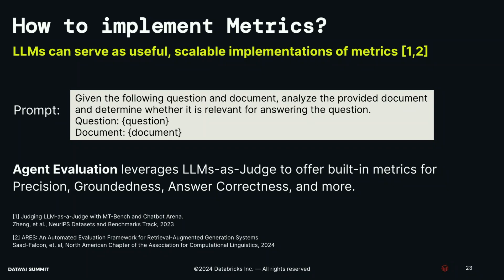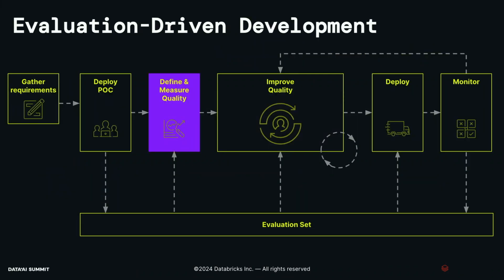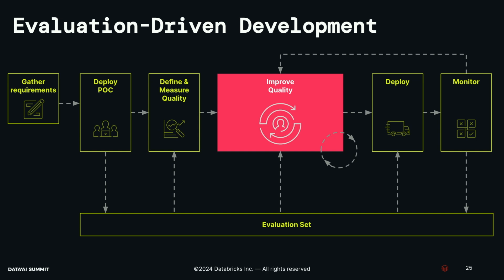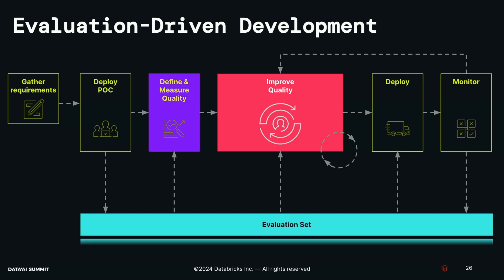Given the subtleties in how these metrics are defined, the way we implement this in agent evaluation is by leveraging LLMs as a judge — a recent research topic showing that you can use LLMs to evaluate LLMs. There are caveats and you need to think about alignment with your use case, but overall you can leverage these to get high-quality results by prompting LLMs to implement your metrics such as relevance, corresponding precision, groundedness, answer correctness, and more. I'll now hand over to Alkis to talk about how all these things work together inside agent evaluation to improve overall system quality.